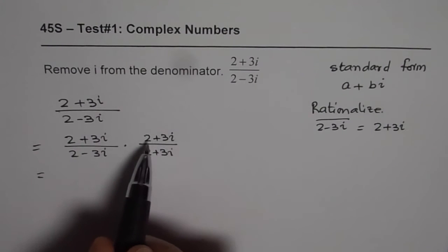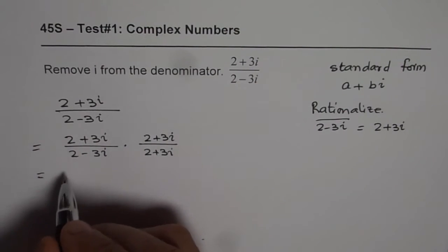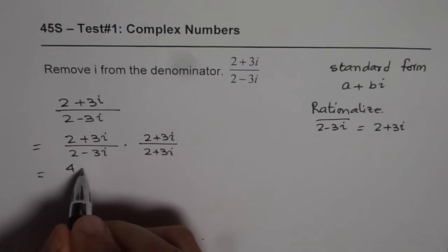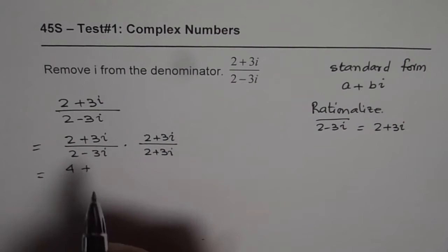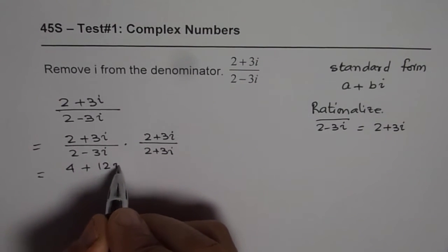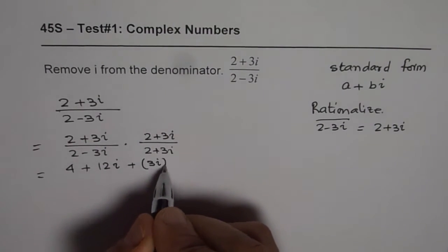So when you do 2 plus 3i times 2 plus 3i, it is 2 plus 3i whole square. That means a square, which is 4, plus 2 times a times b, 2 times 2 is 4, 4 times 3 is 12. So we get 12i plus b square, which is 3i whole square.